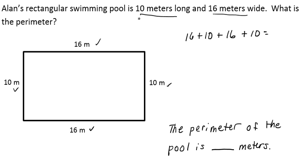That would give me the perimeter. Now I know in addition, I can rearrange the order of my numbers, that's called the commutative property, to make it a little bit easier to add. So I'm going to add my 16 plus my 16, and then add 10 plus 10.